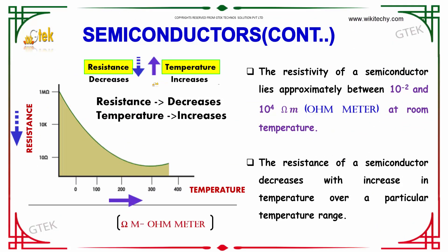The resistivity of a semiconductor lies approximately between 10 power minus 2 and 10 power 4 ohm meter at room temperature.